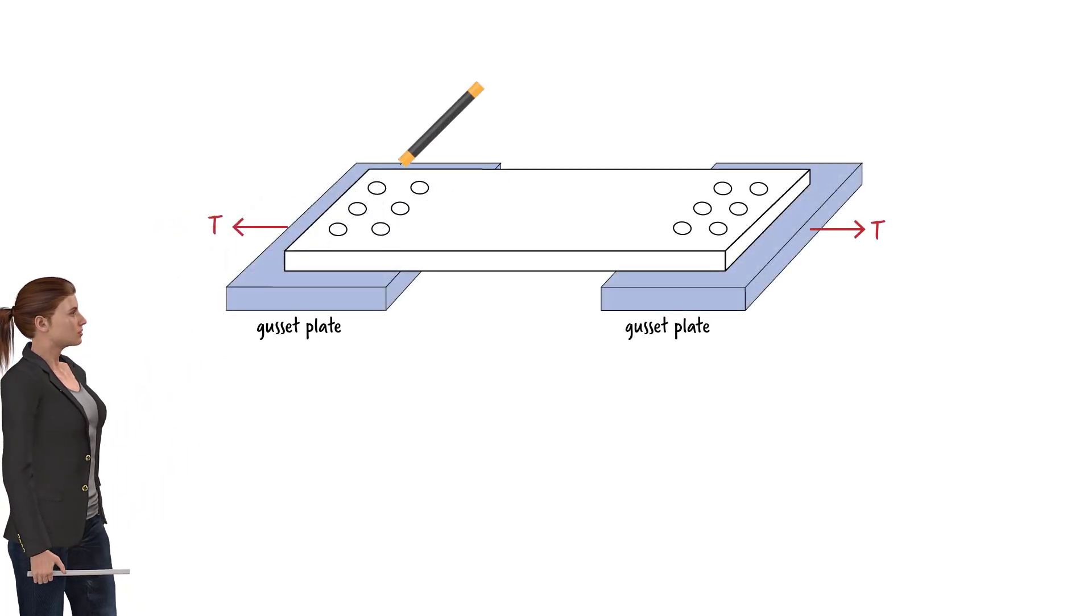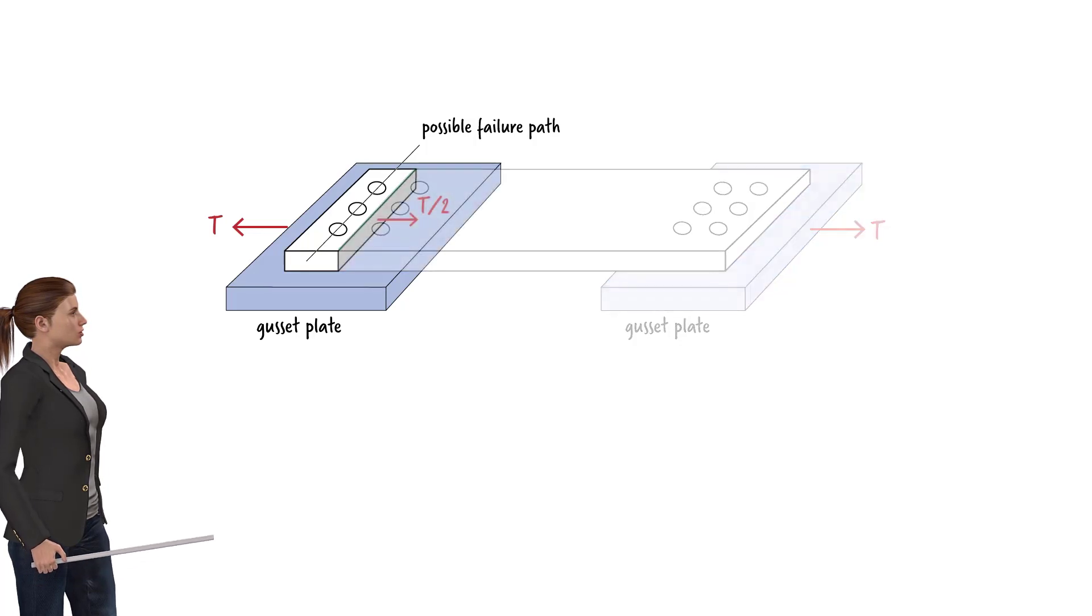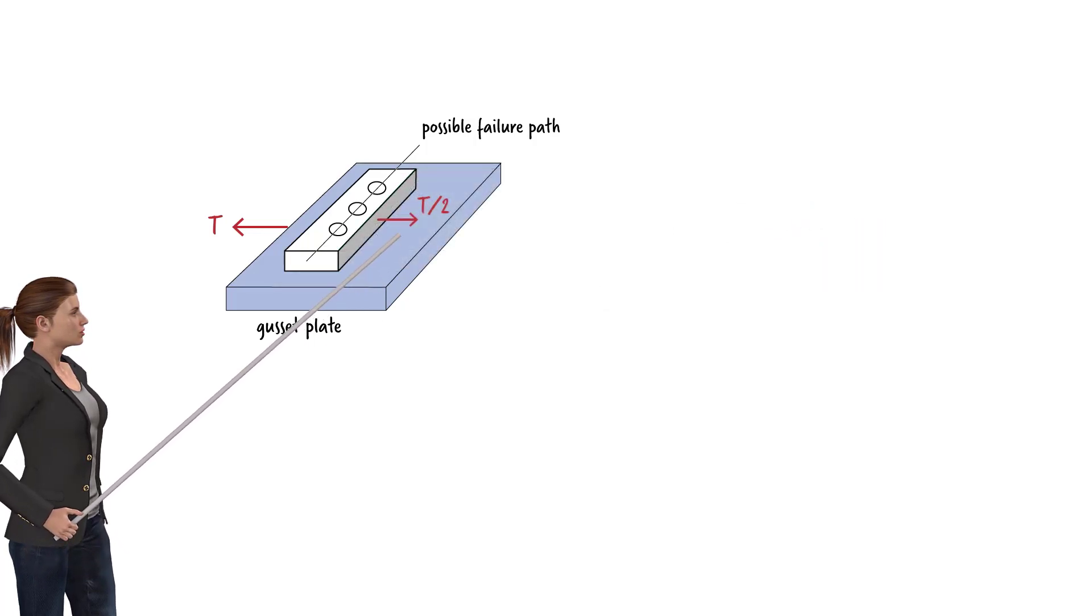We can also consider this path as the path of failure. However, if we examine the area of the cross section along this line, we find it to be subjected to the tensile force of T over 2. Why T over 2?